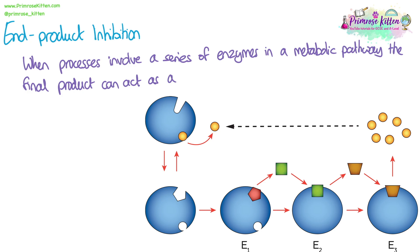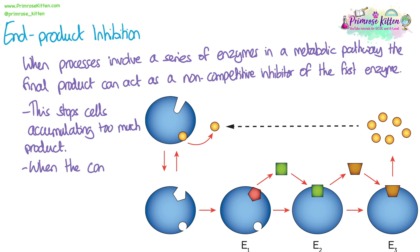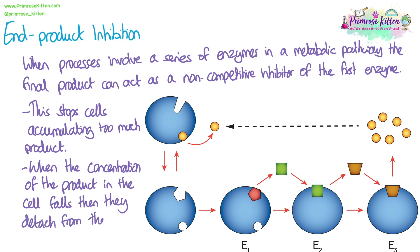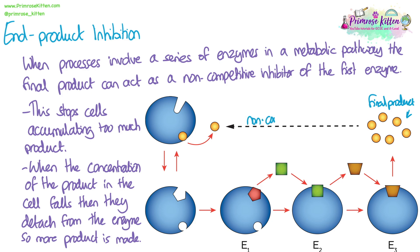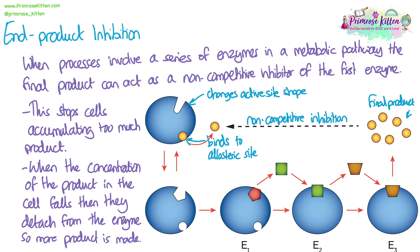There is another way this can work: when a process involves a series of enzymes in a metabolic pathway, the final product of this chain can act as a non-competitive inhibitor of the first enzyme in the sequence. This stops cells from accumulating too much product, and it's reversible — when the concentration of the product in the cell falls, these molecules detach from the enzyme and the enzyme is free to carry out the first stage of the process again. These yellow dots represent the final product made by enzyme three, acting as non-competitive inhibitors of enzyme one.